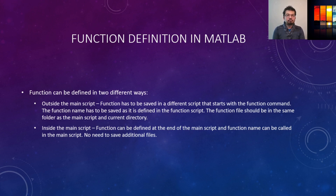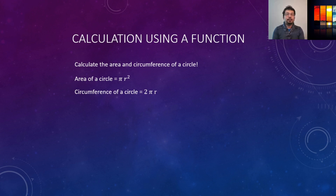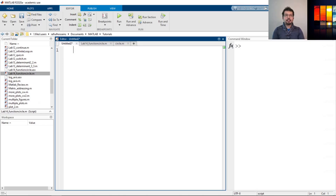Let's go to MATLAB and see how to define a function using an example: calculating the area and circumference of a circle. For the area the formula is πr², and the circumference is 2πr, where r is the radius. I've opened MATLAB and a new script to define the functions. First I'll show you how to define the function outside the main script, then how to define it inside.